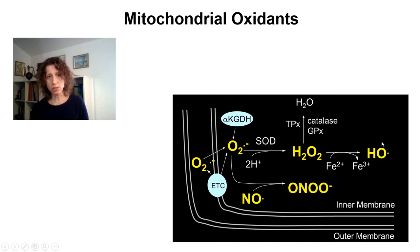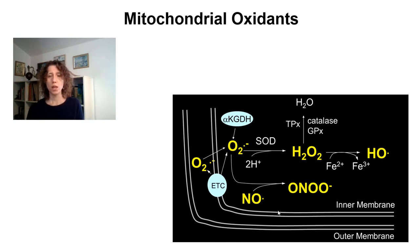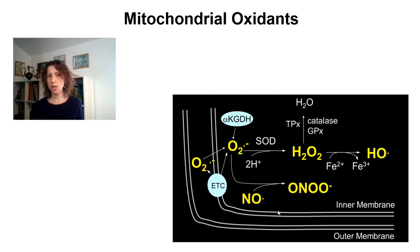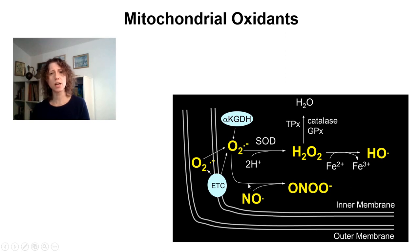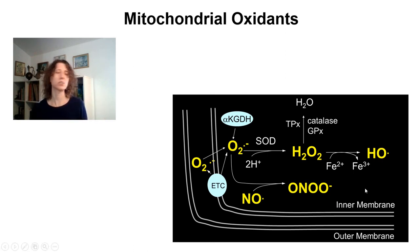In addition to these reactive oxygen species, nitric oxide has been found in mitochondria. Some authors have found evidence for nitric oxide synthases present in mitochondria, while others question their presence. Independently, if nitric oxide is produced within mitochondria or not, nitric oxide is produced in cells and is very diffusible and quite stable, so it is definitely present in mitochondria. Nitric oxide, in the presence of superoxide, can generate peroxynitrite, which is a very reactive species, and there is evidence that it is produced in mitochondria.